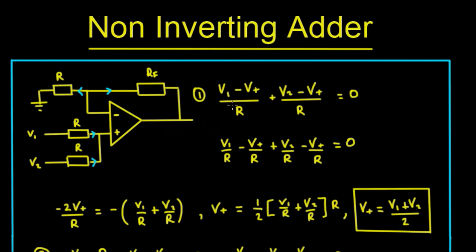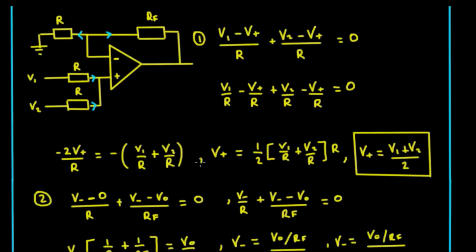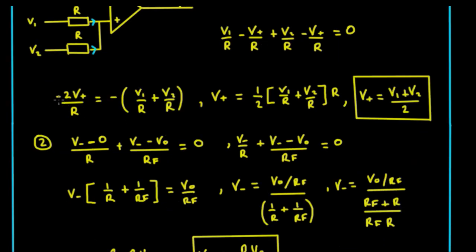We can separate these out, so we get v1/r - v_plus/r + v2/r - v_plus/r equals zero. We gather like terms, so we get -2v_plus/r equals -(v1/r + v2/r).